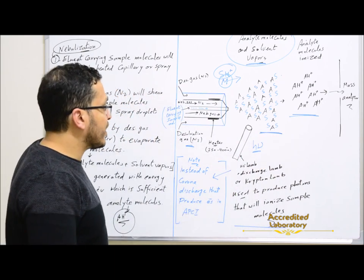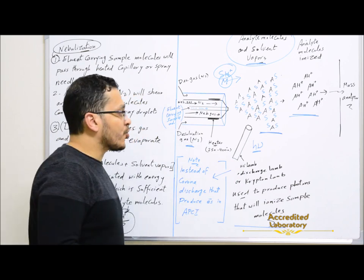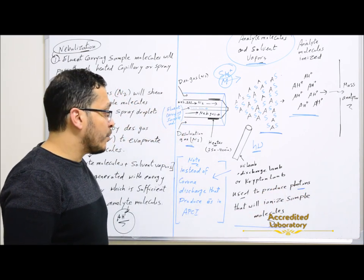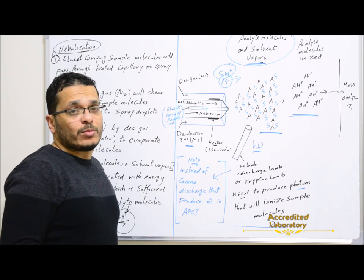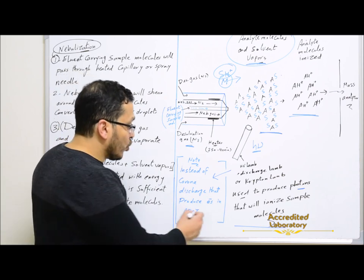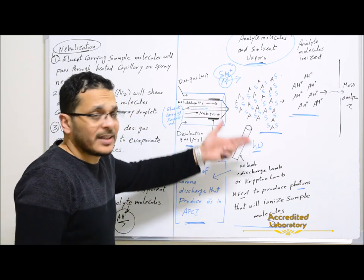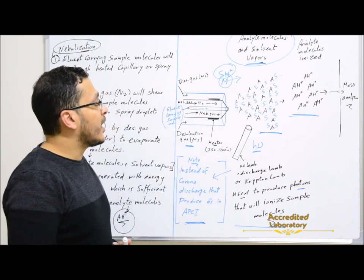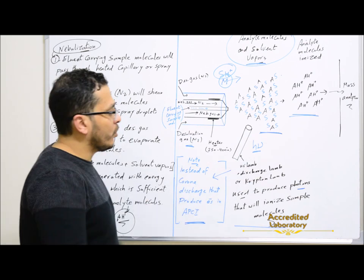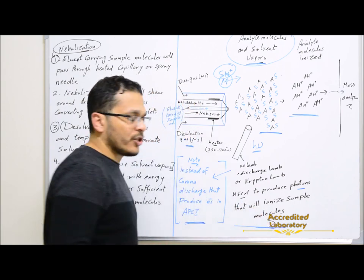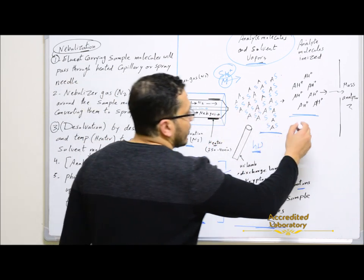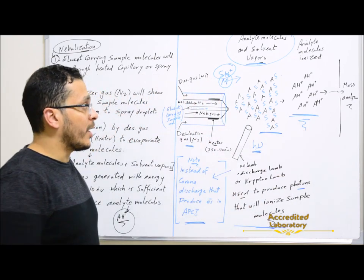Here in atmospheric pressure photo ionization, a UV lamp, discharge lamp, or krypton lamp is used to produce photons that will ionize sample molecules. This is not like in the case of atmospheric pressure chemical ionization, where we use a corona discharge to produce electrons that will ionize the solvent. After that, the solvent will transfer the ions by proton transfer to the analyte molecules, then we get analyte ions transferred to the mass analyzer. Here the UV lamp produces photons that directly ionize analyte molecules to get analyte ions transferred to the mass analyzer.